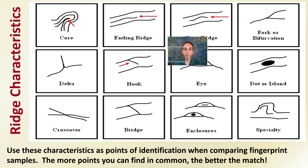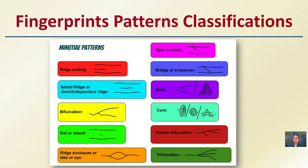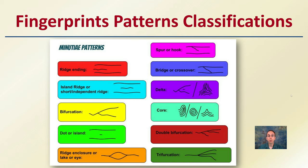Ridge characteristics serve as points of identification when comparing fingerprint samples — the more points in common, the better the match. These include: core, ending ridge, short ridge, fork or bifurcation, delta, hook, eye, dot, crossover, bridge, enclosure, and others. There's a cartoon representation of these provided, so it may be useful to pause or print this out when looking at an actual fingerprint.